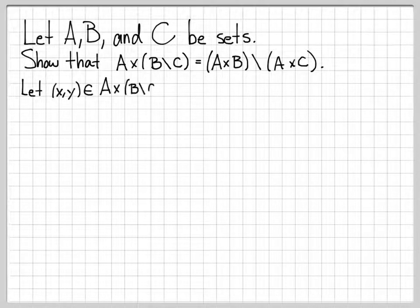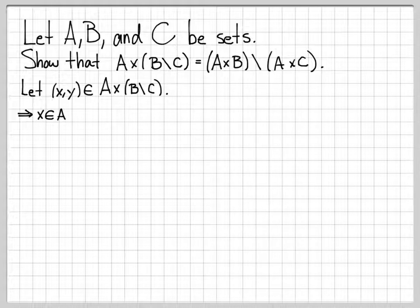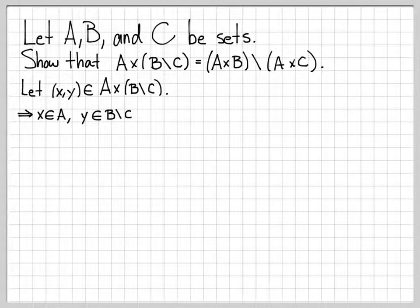We're going to start off by choosing an arbitrary element of the left-hand side set. So we're going to choose an arbitrary element in the set A Cartesian product with B difference C. The Cartesian product is a tuple (x, y). If (x, y) is really in this set, that means the first coordinate x has to be an element of A, and the second coordinate y has to be an element of the second set, in this case B difference C. So by choosing this arbitrary element, this implies that x is an element of A and y is an element of B difference C.